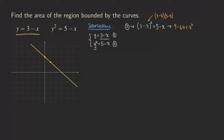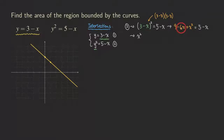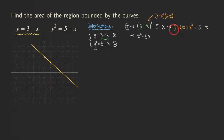The right-hand side is still 5 minus x. We move all terms to the left-hand side. Writing in descending order: x squared, then negative 6x plus x gives negative 5x, then 9 minus 5 gives positive 4, all equal to zero.